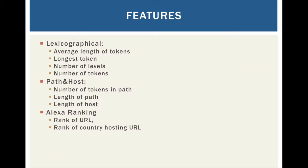In terms of features, we covered lexicographic features: average length of tokens, longest token, number of levels, and number of tokens. We define a token as when we break down the entire URL into just the words it contains without the symbols — that is dashes, slashes, full stops, any punctuation marks — just the words. Those are what we define as tokens.